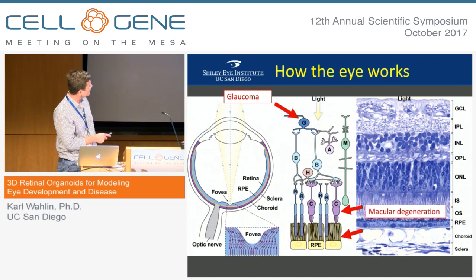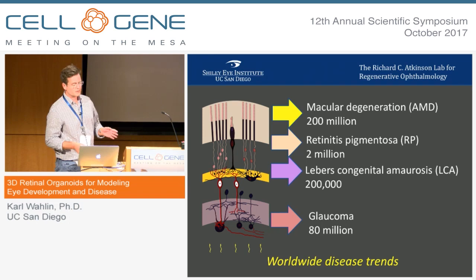You have photoreceptors on one side — both rods and cones — interneurons in the middle, and then ganglion cells, which ultimately send signals to the brain.